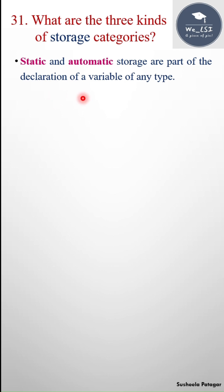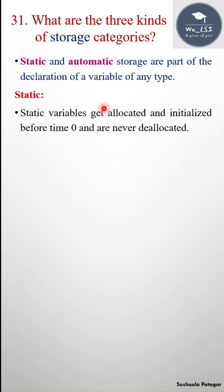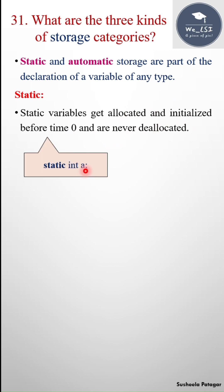Let's see what static is first. Static variables get allocated and initialized before time zero and are never deallocated. For example, static int a — here a is a variable of type int and we have made this variable as static. That means the same memory will be allocated throughout the simulation.